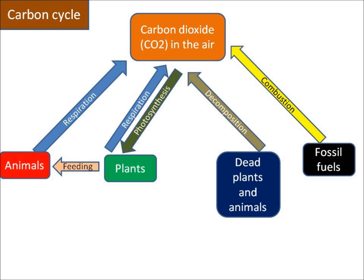The carbon cycle shows how the element carbon is moved around. Carbon exists in the air mainly as carbon dioxide, CO2.